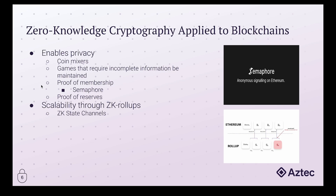That wraps up some common privacy applications. Looking at scalability: with zero-knowledge proofs, you're able to verify a proof without knowing the underlying components. One exciting application is implementing ZK proofs with rollups — a way of bundling many transactions on a layer two and submitting them to a layer one such as Ethereum. Through zero-knowledge, you don't need to inspect the underlying transactions; you compute a proof to determine their validity. The alternative is an optimistic rollup, where you hope in good faith all transactions are valid and rely on someone to dispute invalid ones — with ZK proofs, that uncertainty is eliminated.